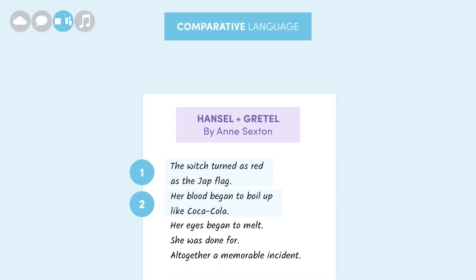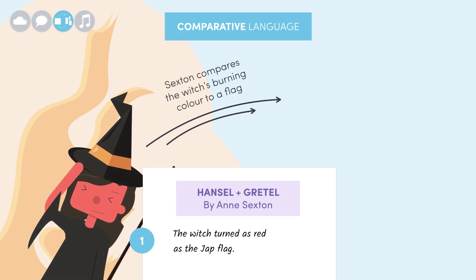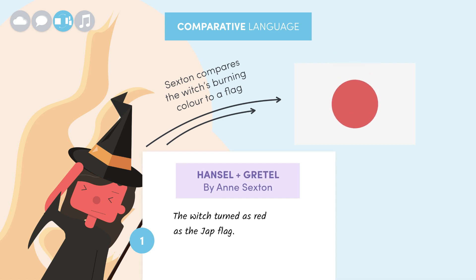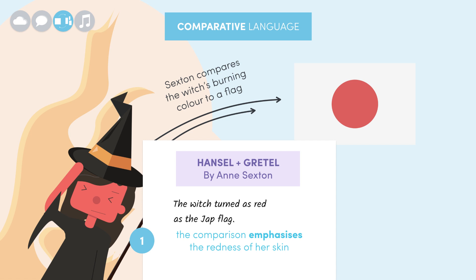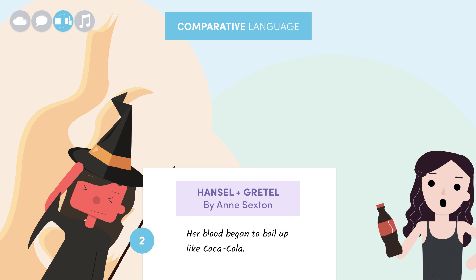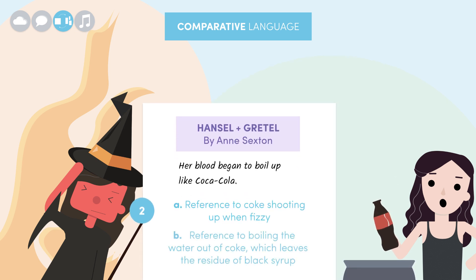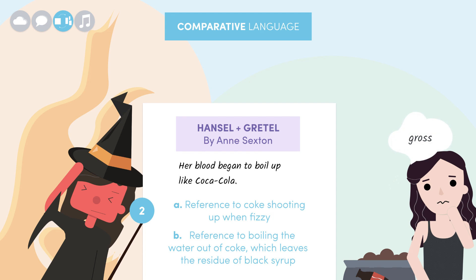In our extract, there are two interesting similes to look at. First, Sexton's comparing the witch's burning color to a Jap flag. Japanese flags have a red circle in the middle, so that makes sense — she's just emphasizing the redness. Second, she says her blood boils up like Coca-Cola. That could refer to two things: it could be a reference to Coke shooting up when it's fizzy, or it could actually be a reference to boiling the water out of Coke, which leaves behind a pretty grim-looking residue of black syrup. Either way, it's a pretty vivid and gross simile, and it's odd to compare something as sweet and sugary as Coke to blood.